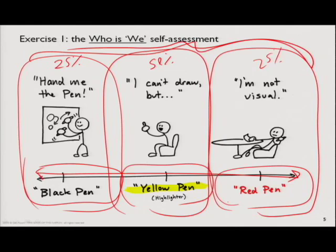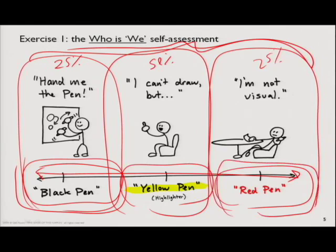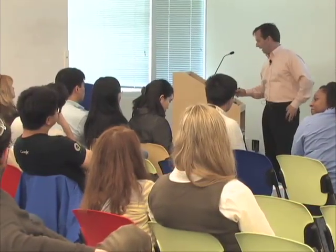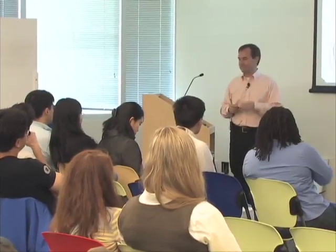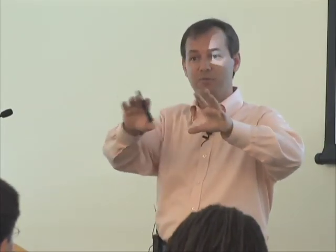Just by a show of hands — how many people would consider themselves a black pen person? How many would consider themselves a red pen person? And how many would consider themselves kind of in the middle? It seems like a pretty good balance. As you go to different businesses, you find each has a very distinct culture — sometimes the culture is very much skewed towards the black pen side, and sometimes towards the red pen side. I was curious how a company like Google would shake out, and I find it intriguing that you map to what I've found is the normal setting in most business situations.